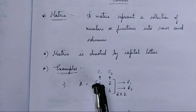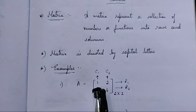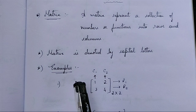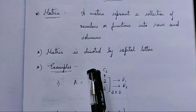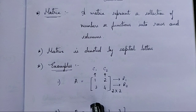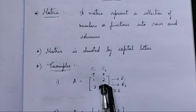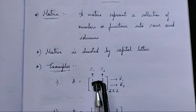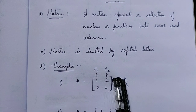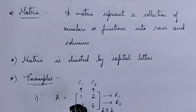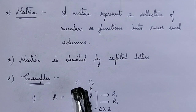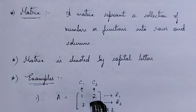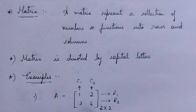So these are rows — we represent rows this way and columns this way. So this is row 1, that is R1, row 2 R2. This is column 1 C1, column 2 C2.